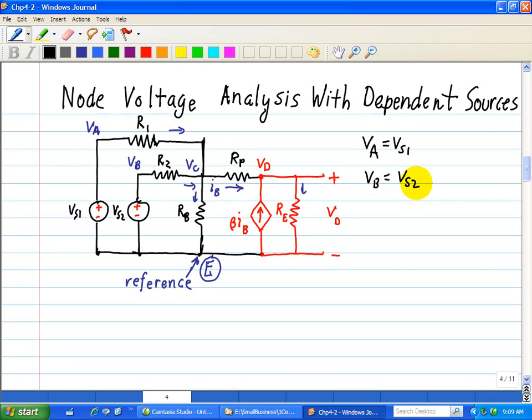Now doing this by inspection, we'll do it at node C. We see what devices are connected at node C: R1, R2, RP, and RB. So therefore we use conductance.